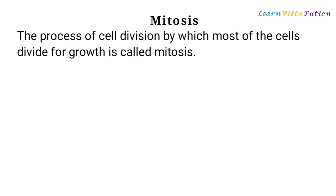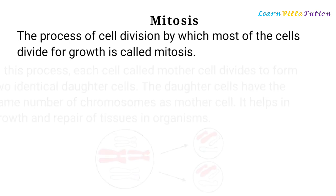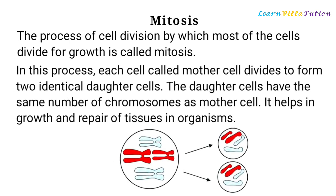Mitosis is the process of cell division by which most cells divide for growth. In this process, each cell called the mother cell divides to form two identical daughter cells. The daughter cells have the same number of chromosomes as the mother cell. Mitosis helps in growth and repair of tissues in organisms.